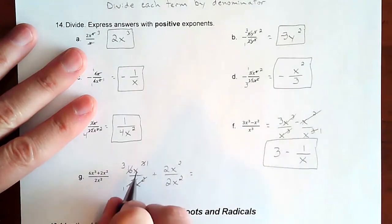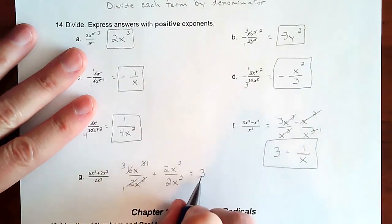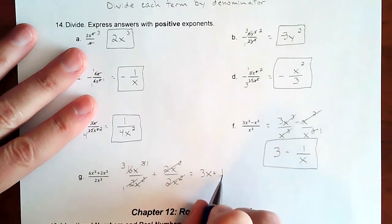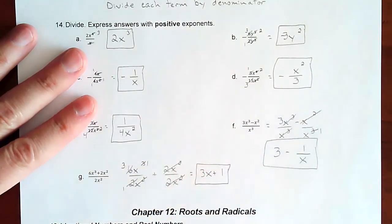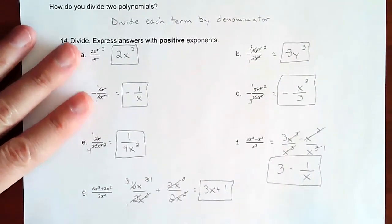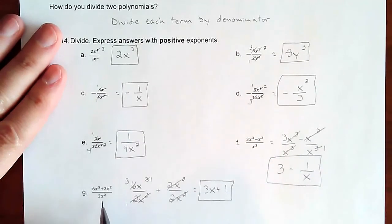So you're left with three X on the first piece and then plus two X squared divided by two X squared. They totally cancel each other out and leave you with a one. And that was dividing polynomials, at least when you have just dividing by a monomial.